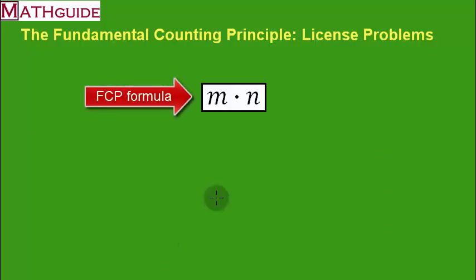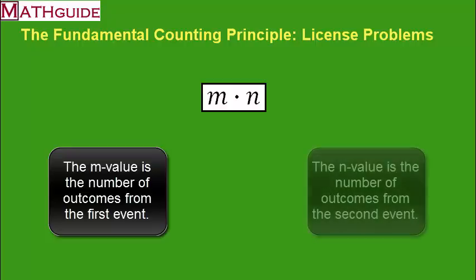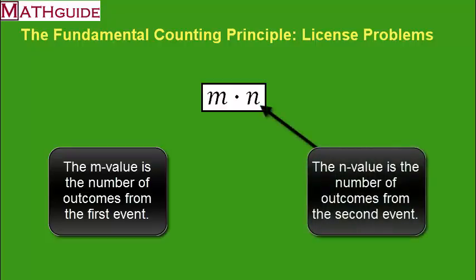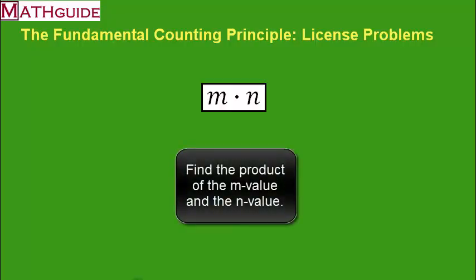So the fundamental counting principle has a very simple formula. It's M times N. What does the M stand for? The M stands for the number of outcomes that occur in event one. What does N stand for? N stands for the number of outcomes that occur for event two. So if I want to figure out what happens when I take two events and I put them together, I just multiply the number of outcomes in each. And that gives me the total number of outcomes.